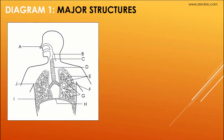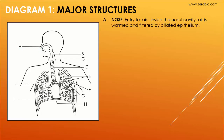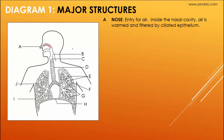All right, so here we go. This is diagram one: major structures of the respiratory system. Structure A points to the nose — this is for the entry of air, and also for the release of air. Inside the nasal cavity, air is going to be warmed and filtered by cells that have cilia on them — ciliated epithelium. So the air is coming in and then we have structure B.